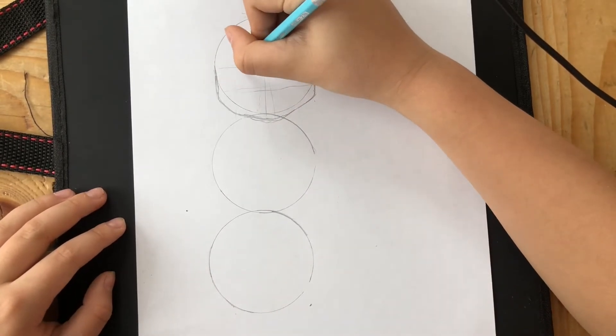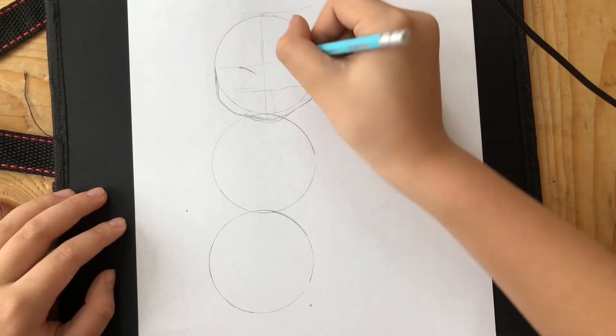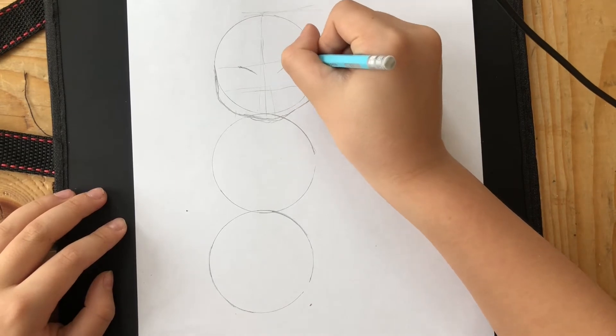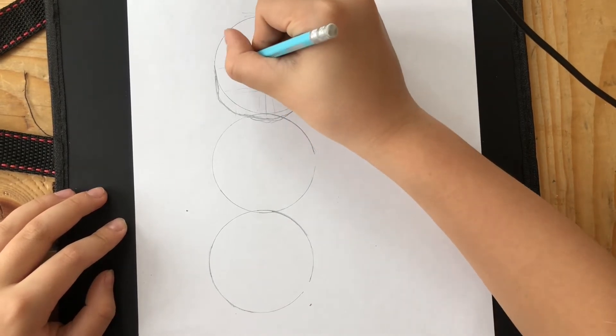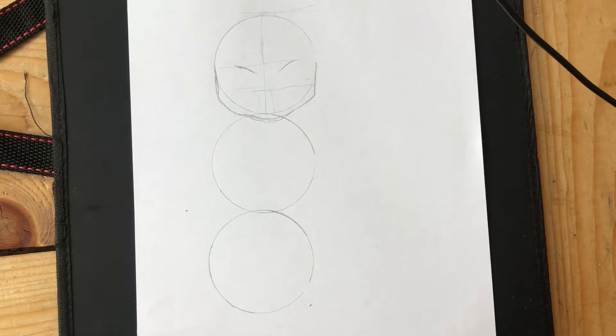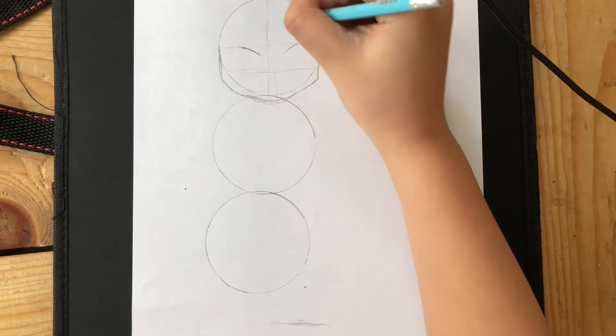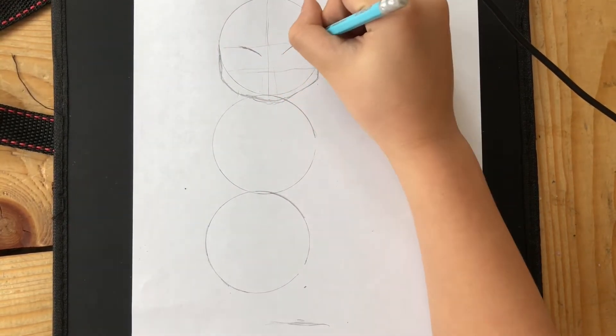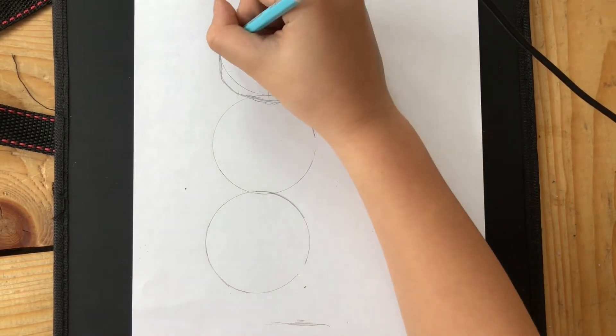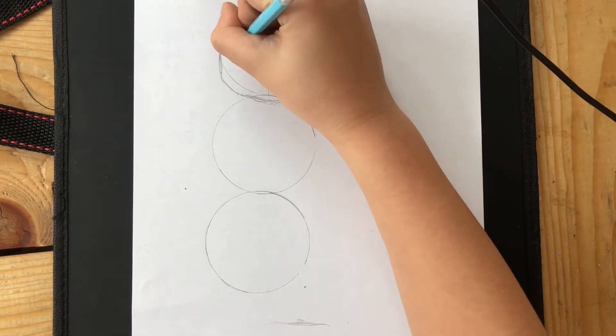Then you have to draw two arcs at the top and put a line at the end of each one, and then put another one beneath it. That's going to be the eyes. Be sure to make it very big so it looks cute, that's why it's a chibi.